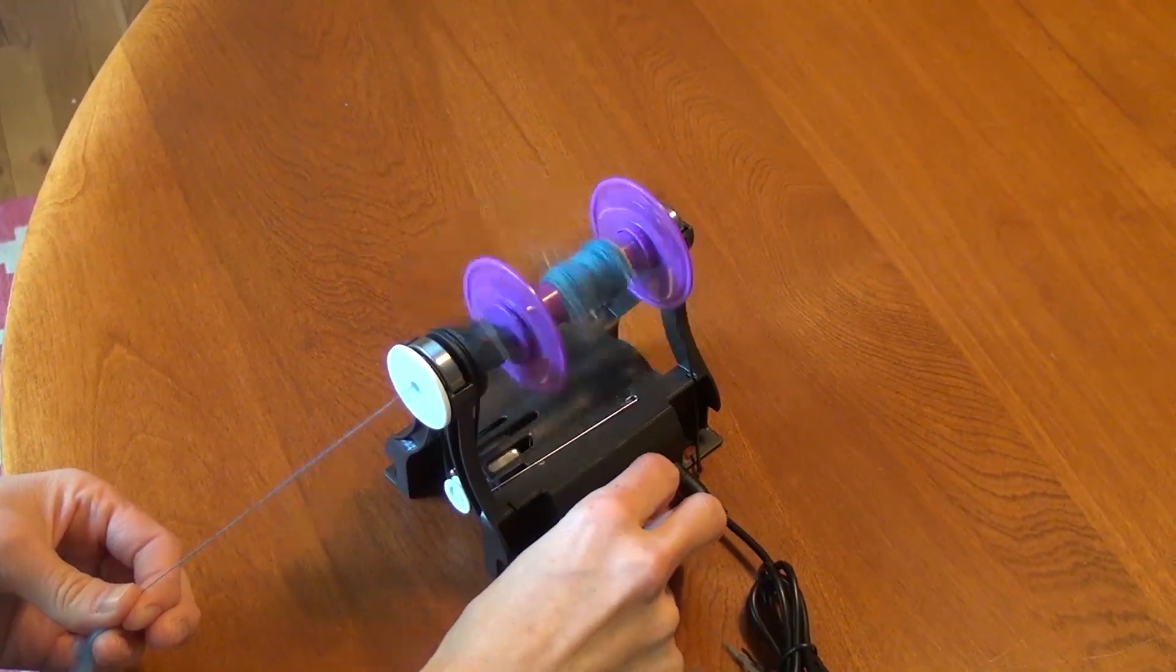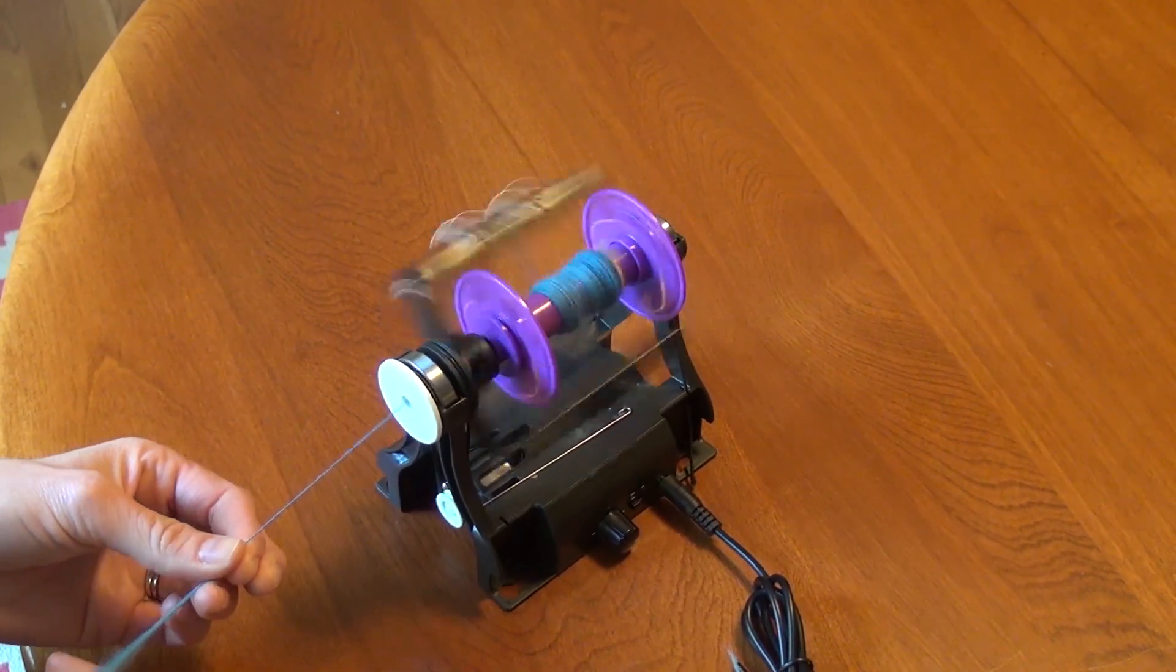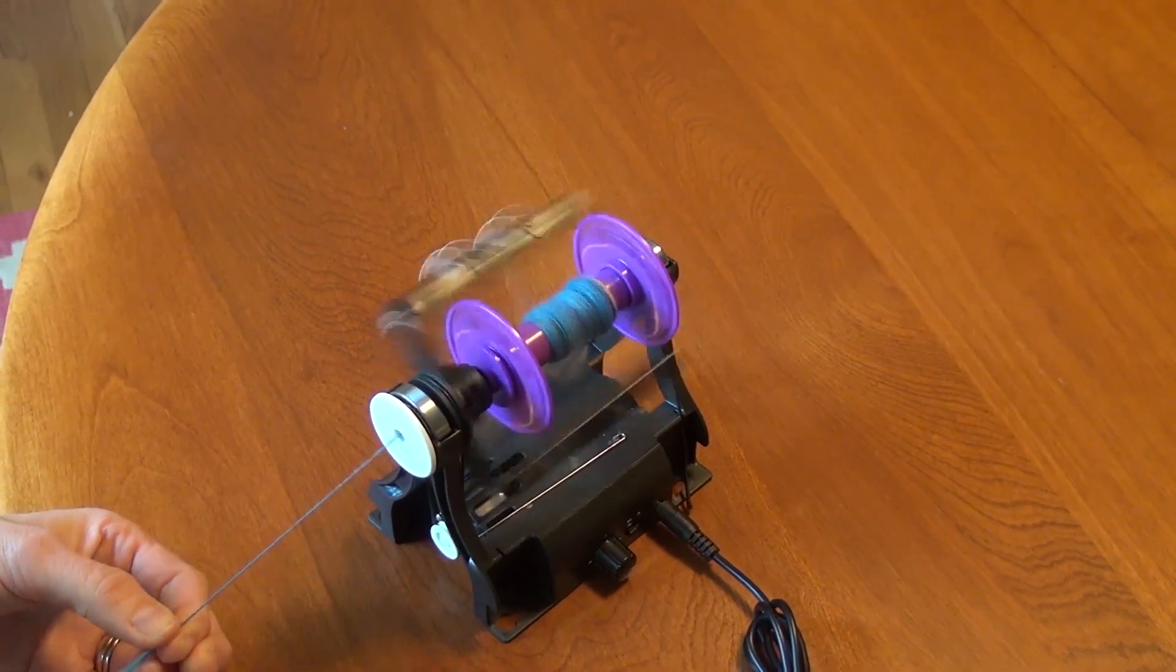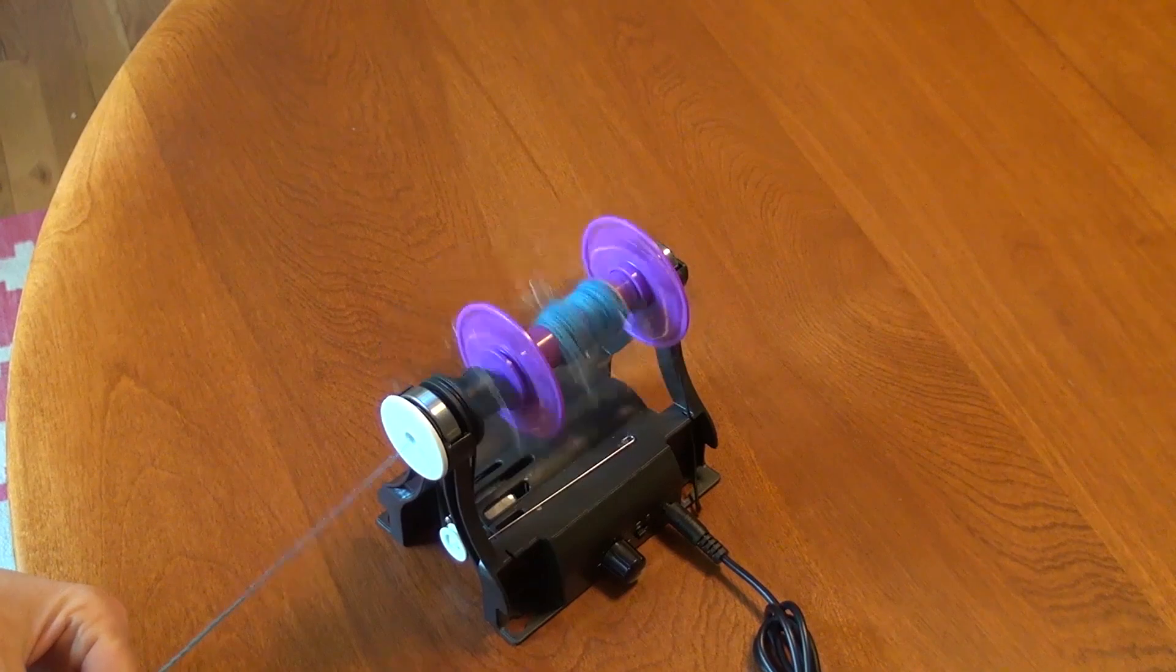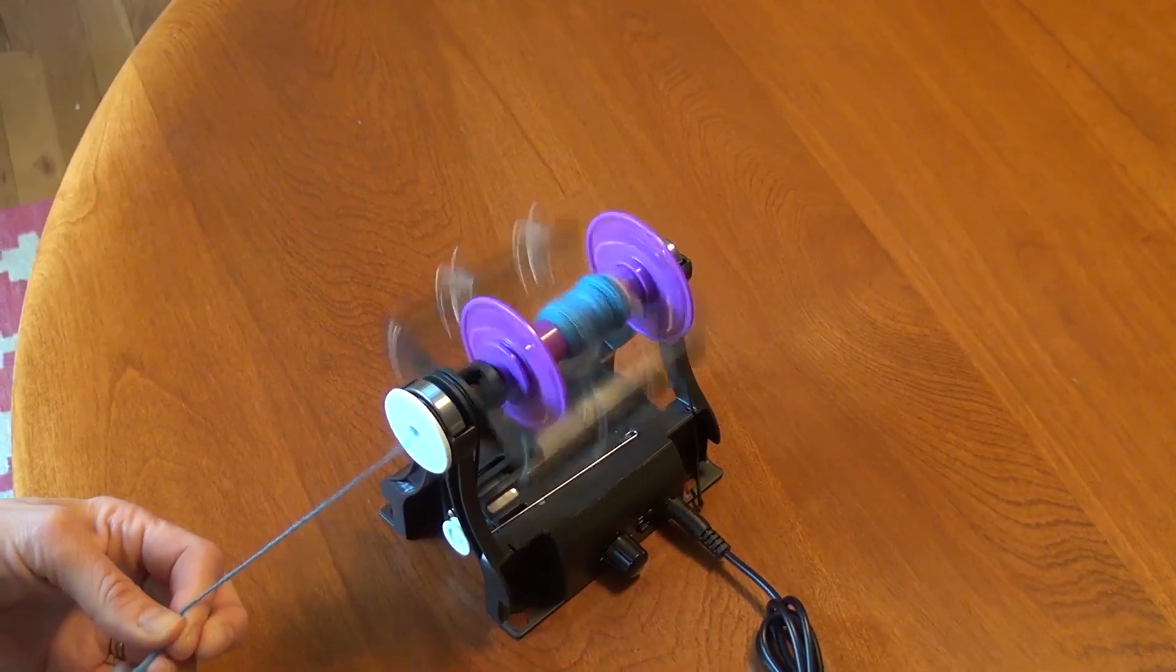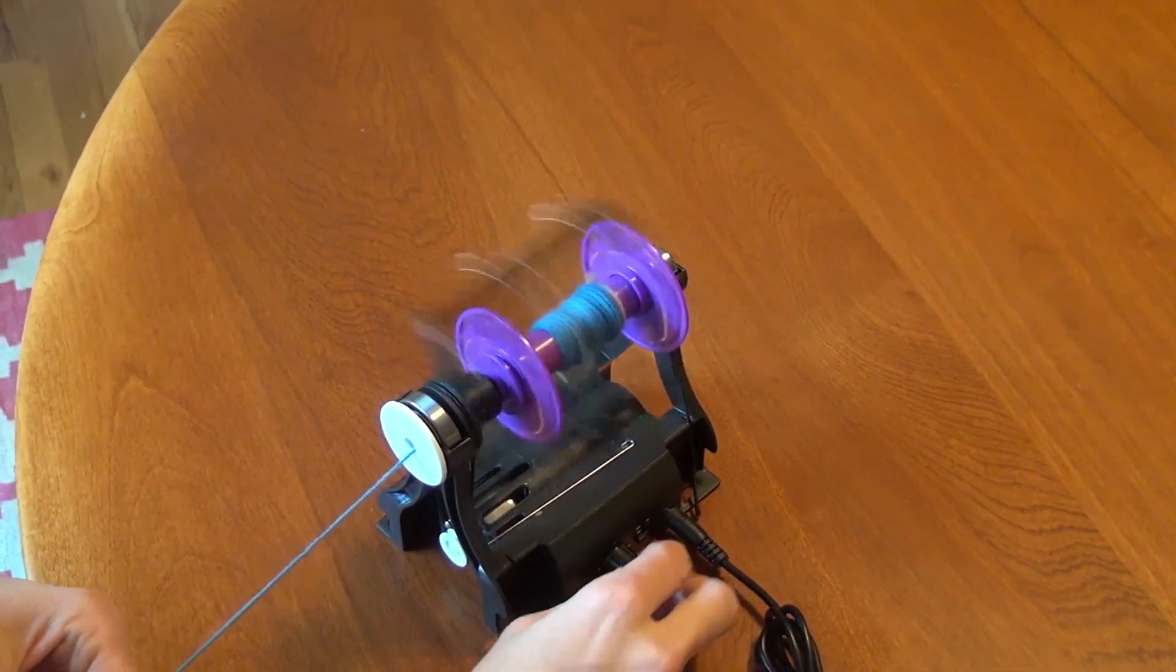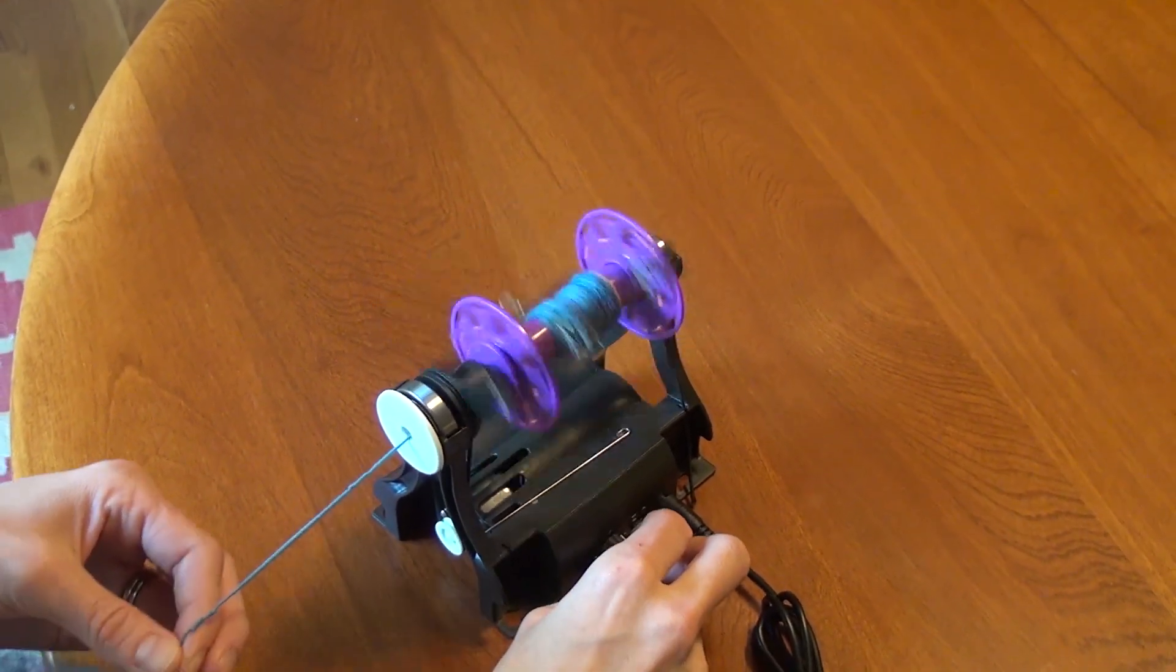If you over spin your yarn you will get clumps where it twists in on itself like this. Those little clumps can sometimes get stuck on the sliding hooks or in the orifice hole. If that happens you won't have any uptake and this will cause your yarn to get even more over spun until it eventually breaks.